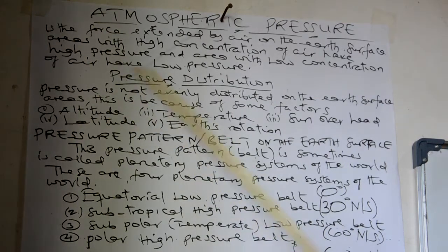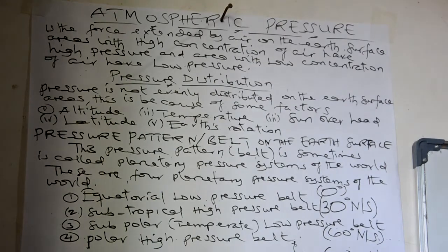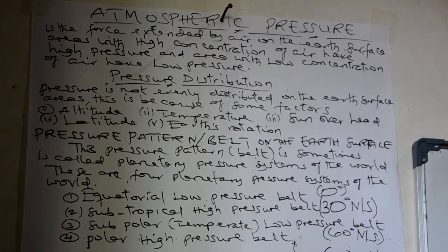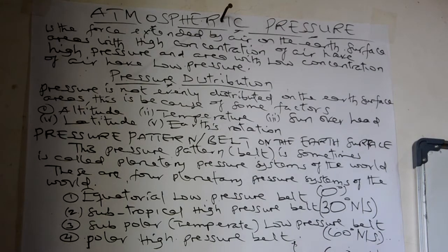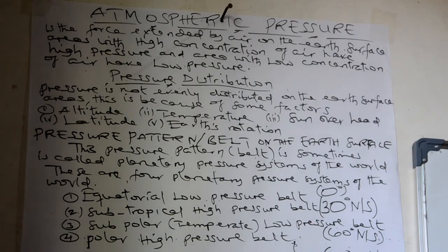Pressure distribution. The meaning of distribution is the spreading of pressure from one place to another, or why there are some areas which have high concentration of pressure and other areas have low concentration of pressure. The following are factors that can influence the distribution of pressure. Pressure is not evenly distributed on the earth's surface because of some determining factors.